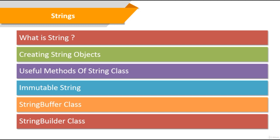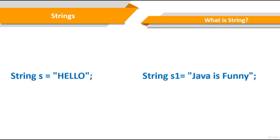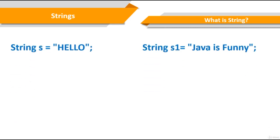So, here's what you've been waiting for, let's get to it. But what is a string? A Java string is a series of characters, like the word 'hello', or the phrase 'Java is funny'.